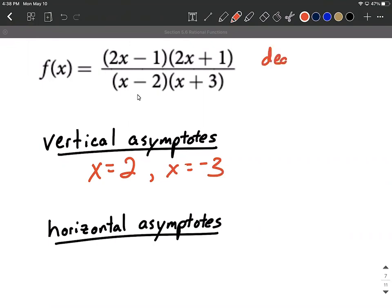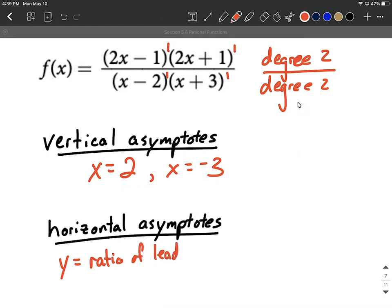Now comparing the degrees, we can say degree two compared to degree two. Again, adding together these multiplicities, one plus one makes degree two, one plus one makes degree two here. When they're the exact same degrees, what we want to do is we want to compare the ratio of leading coefficients. So we say y equals the ratio of leading coefficients.